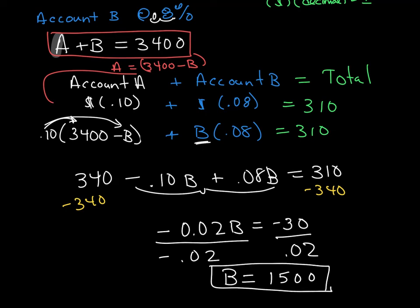Now, how do you find the amount that goes into account A? Remember, we said account B was the one at 8%. To find how much goes into account A, I just go back to my 3400 minus B and plug that in. I know that in account A, which we called 10%, is equal to $1,900.